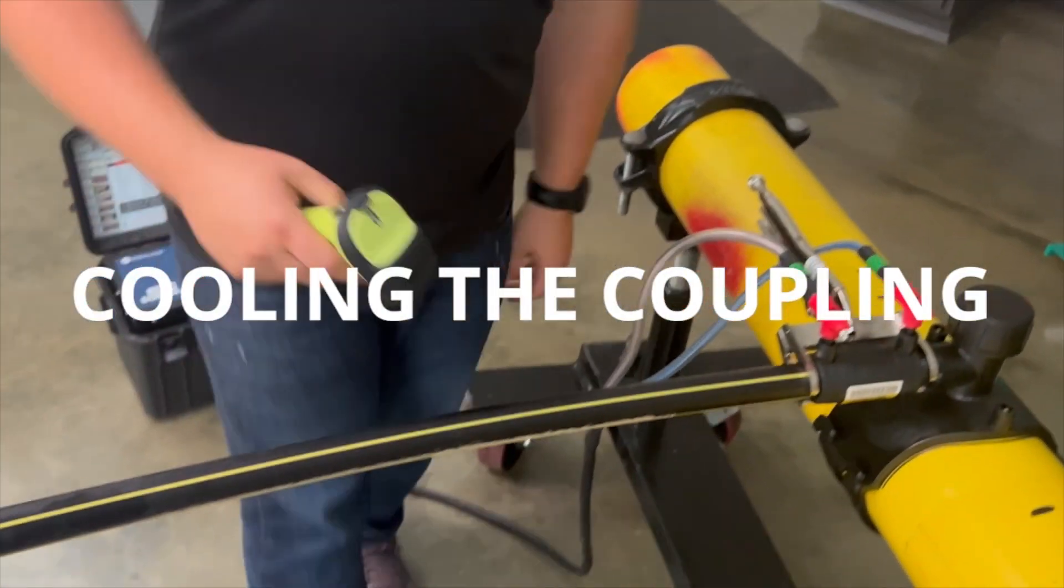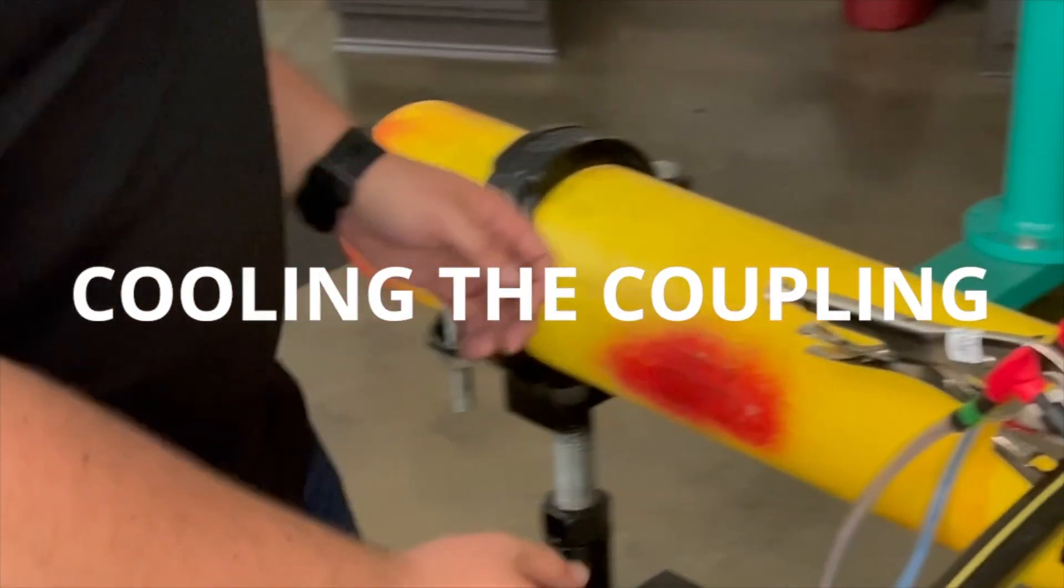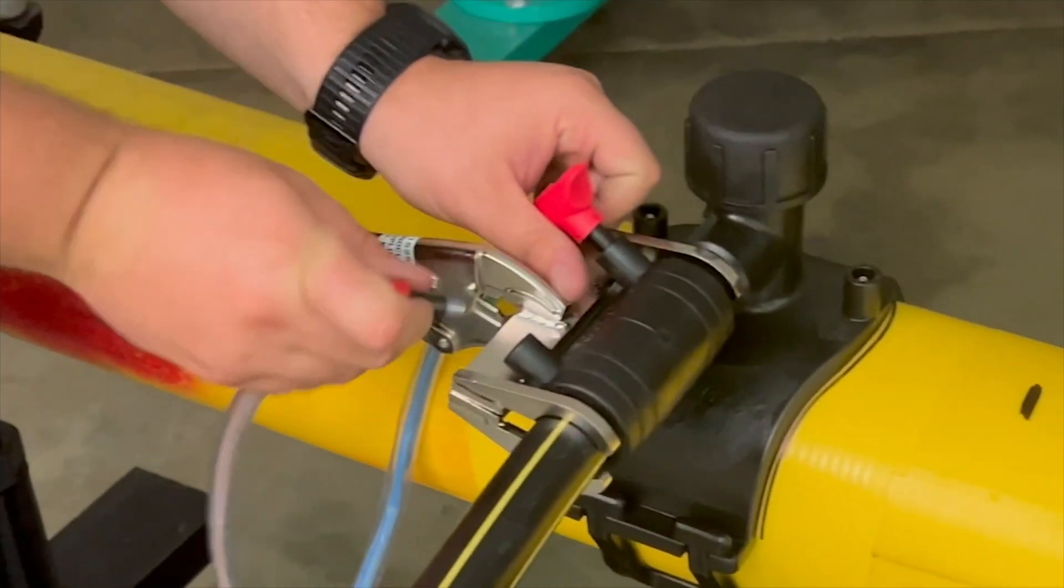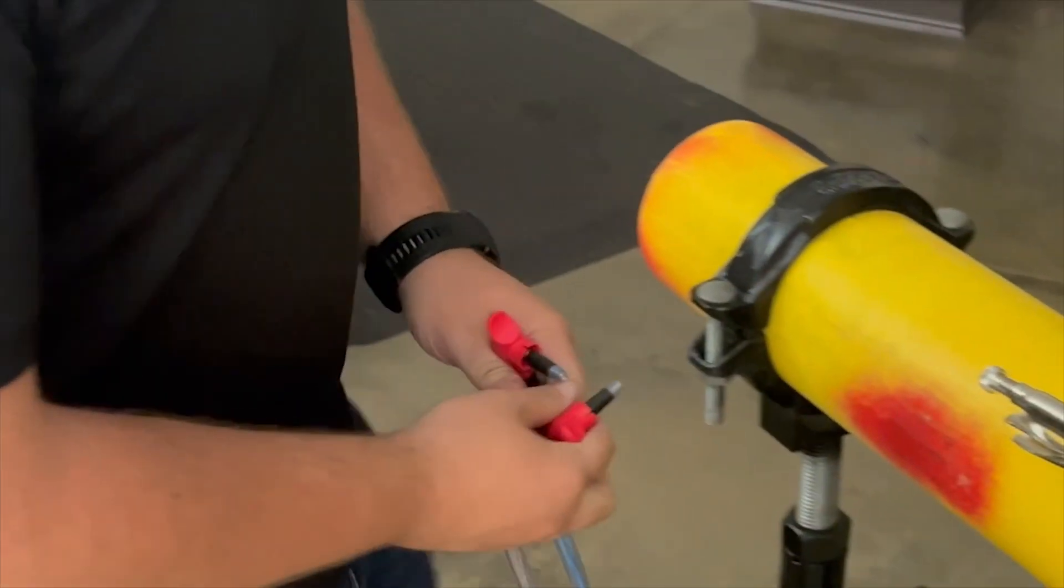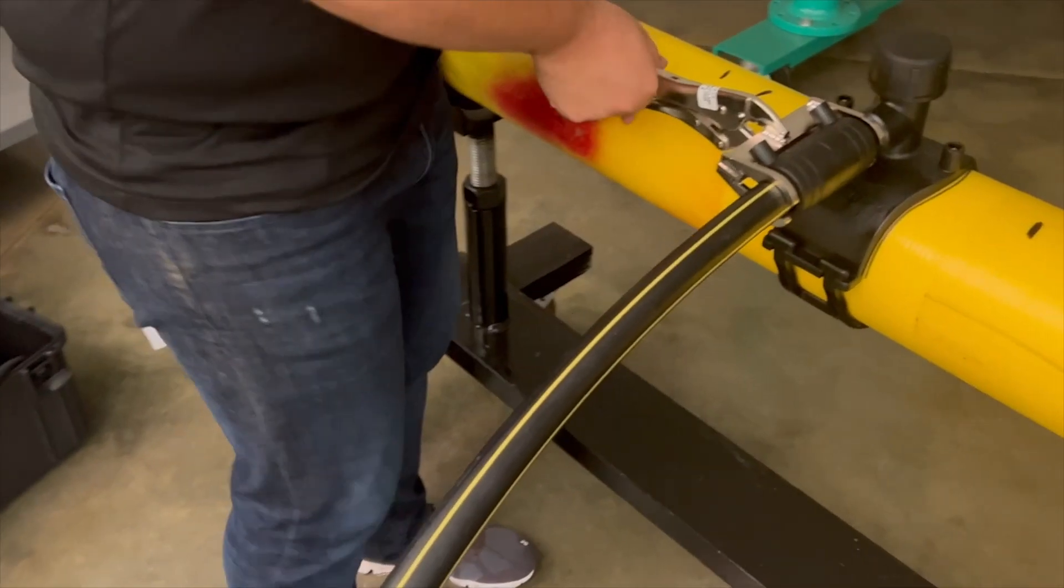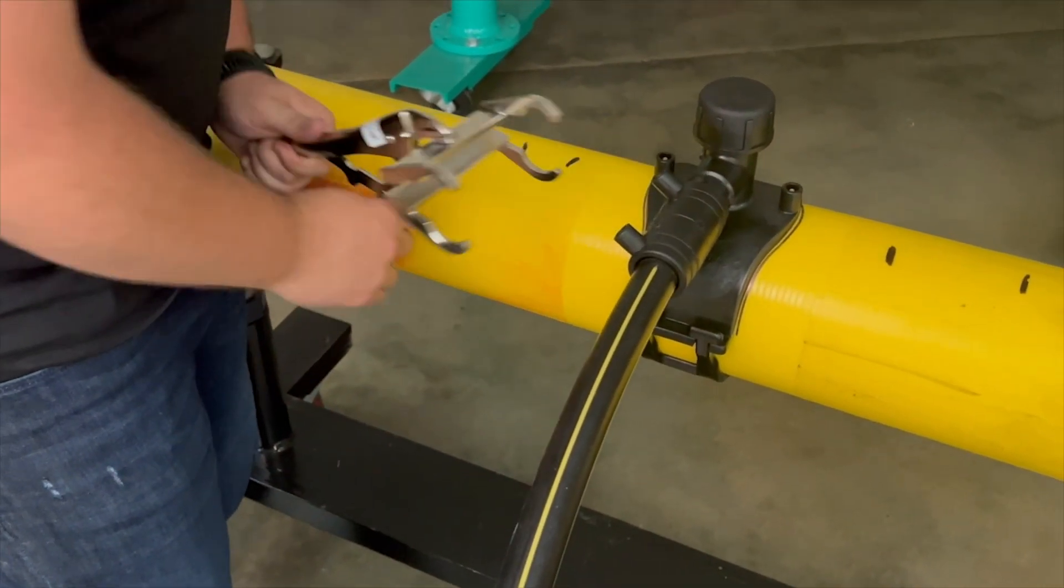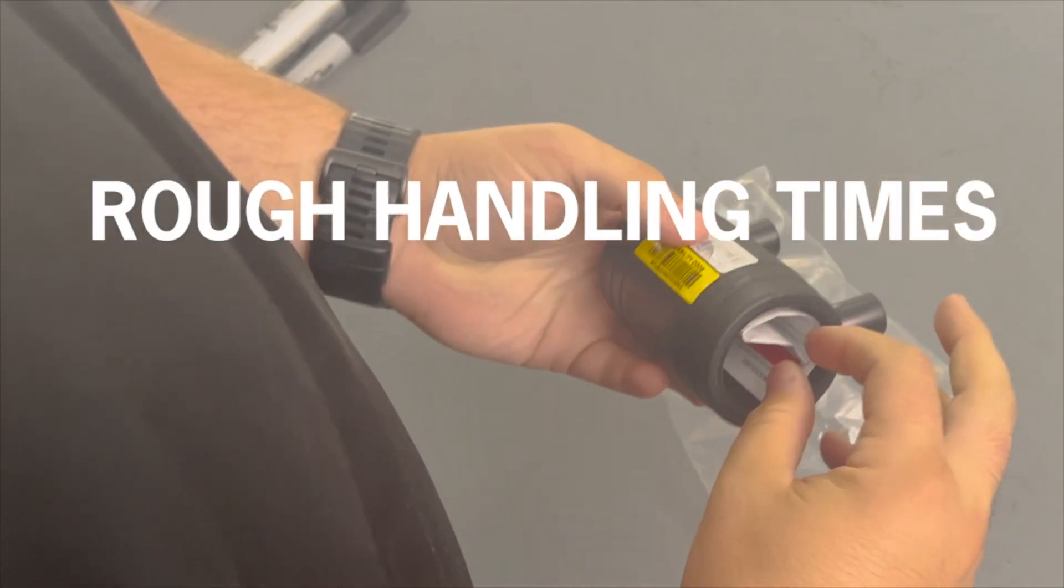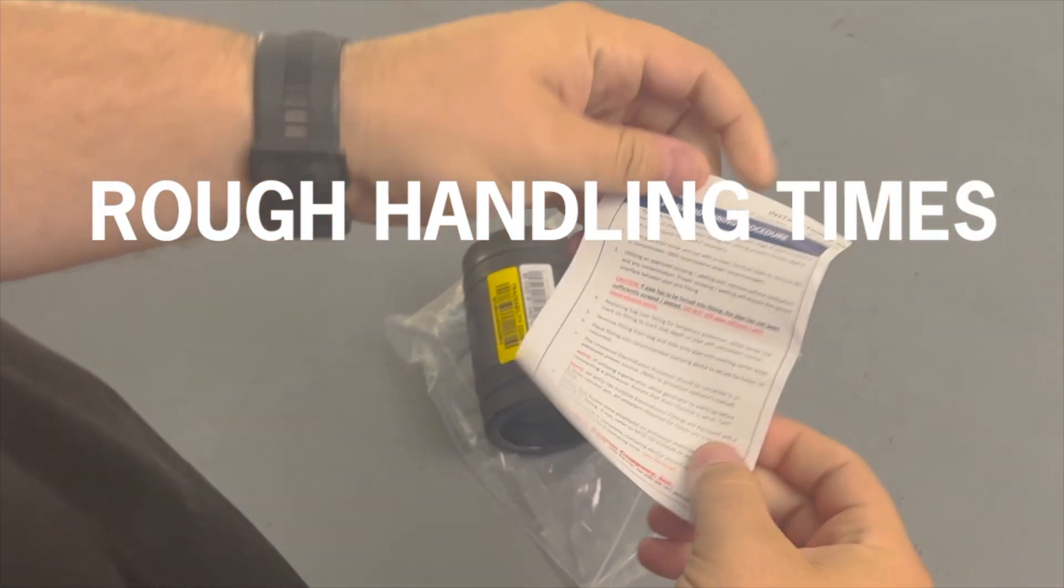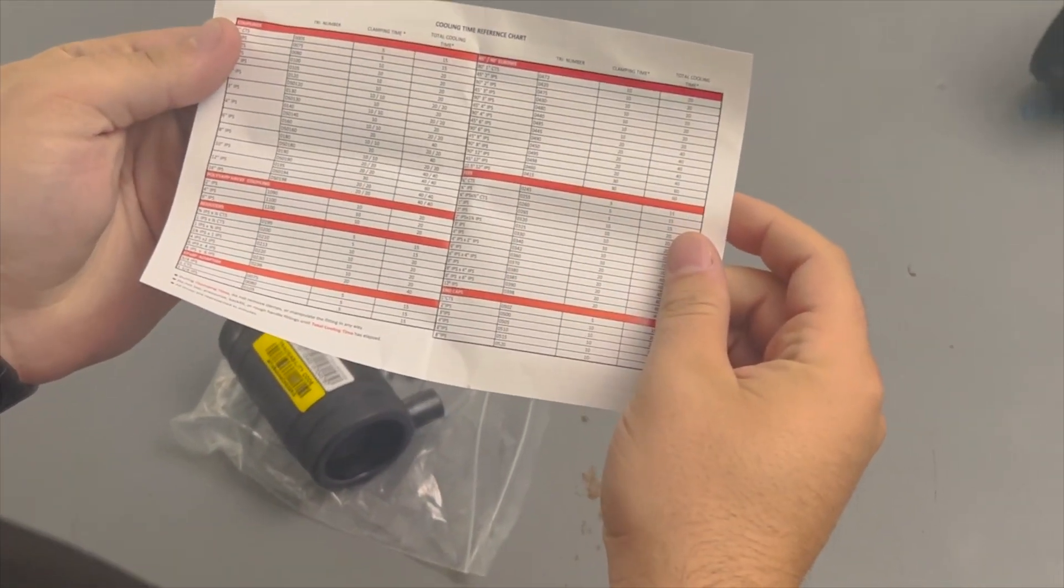Part 7: Cooling the coupling. Since we're using an external clamp on this joint, make sure that clamping time has elapsed before removing the clamp. Clamping time is printed on the coupling body, coupling labels, and is displayed on the processor. Prior to proceeding to the next step, make sure rough handling times have elapsed. For published rough handling times, refer to the printed insert included in the coupling package. If this is not available, simply double the time printed on the fitting label.